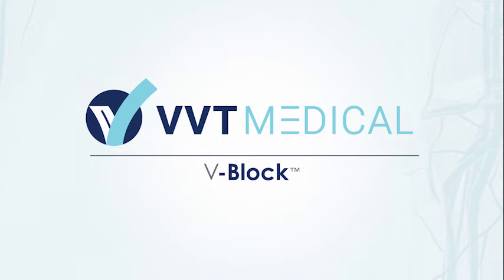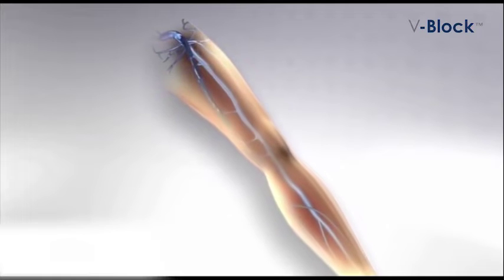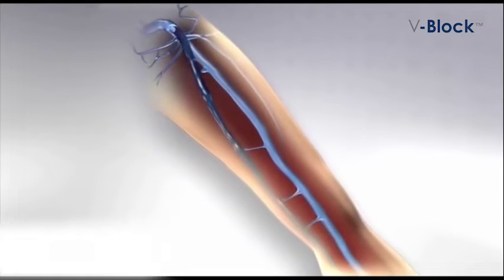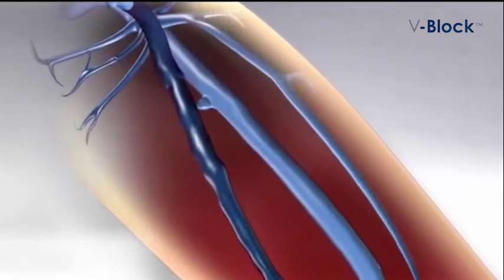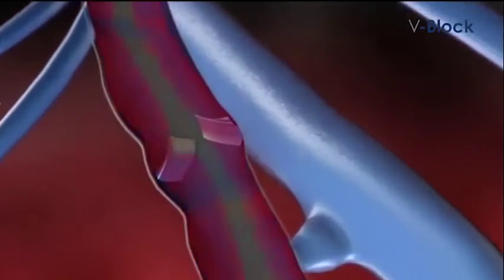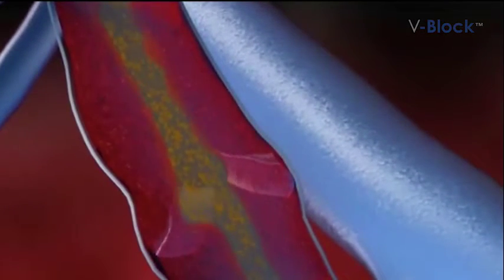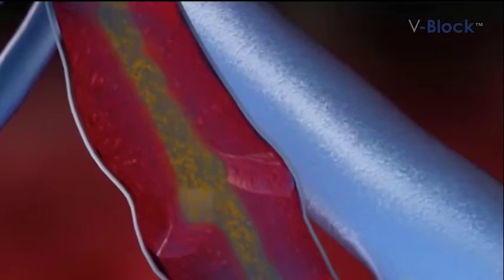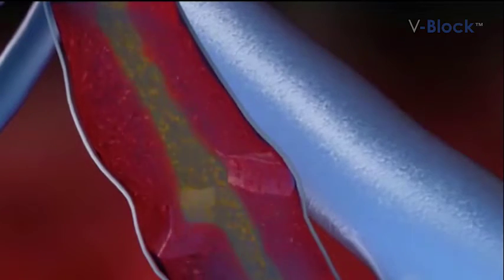The v-block procedure provides a unique, simple, and safe method for the chemical ablation of clinically challenging greater saphenous veins. It does not require tumescent anesthesia and is a powerful alternative to conventional treatments. Reverse flow in the vein is caused by malfunctioning or incompetent valves.